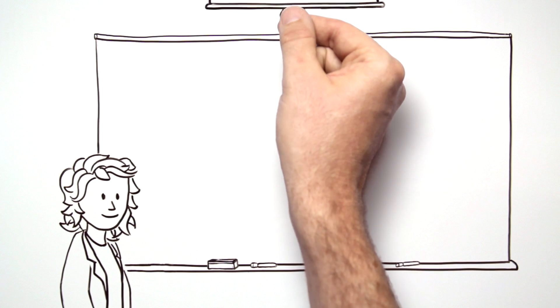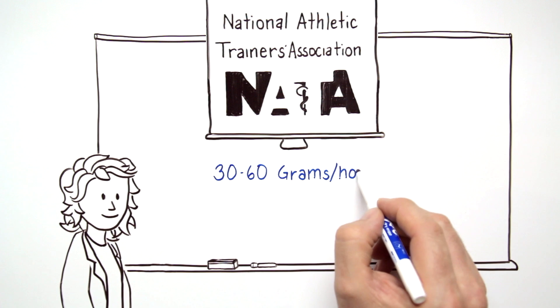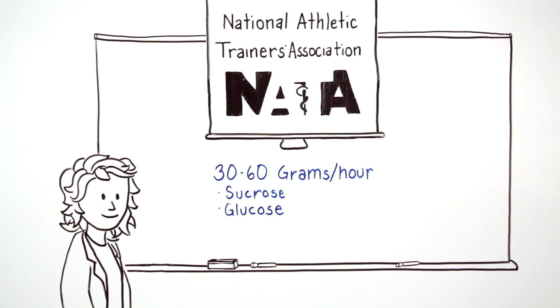The National Athletic Trainers Association recommends that for training or competition lasting an hour or more, athletes should consume 30 to 60 grams of these rapidly-burned carbohydrates per hour.